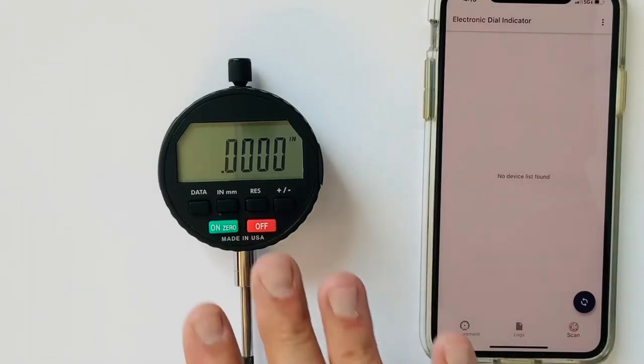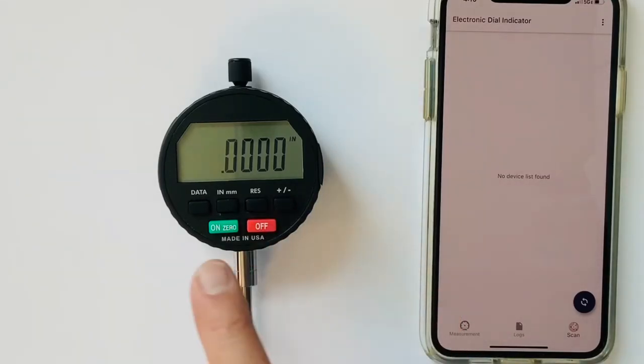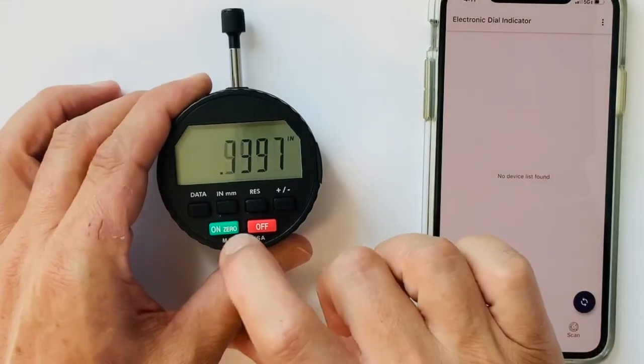To get into the basic functions of the indicator it has six buttons. The off button, on button, when it's on it becomes a zero. So you have your floating zero.